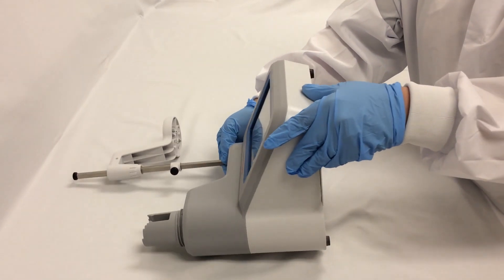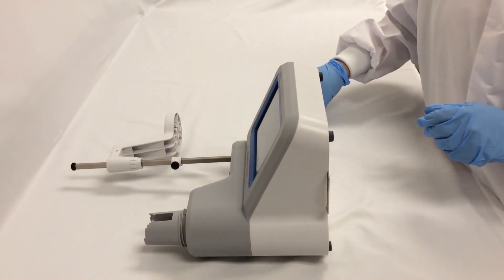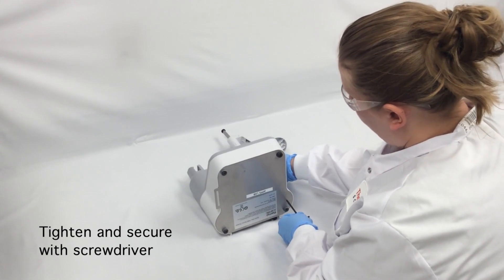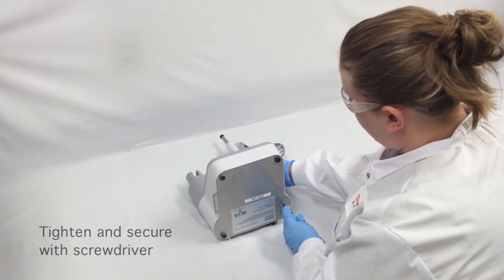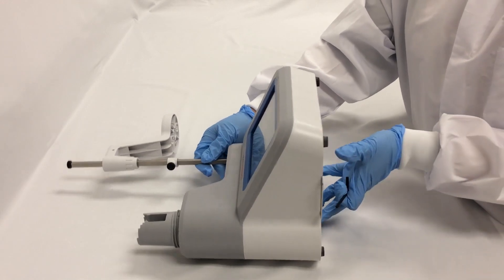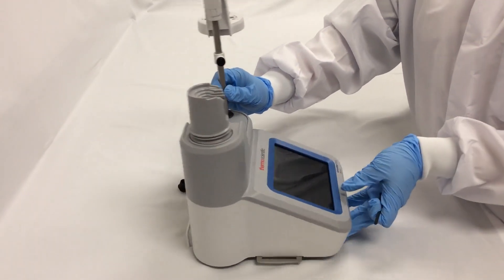Turn the titrator onto its side and use the included screwdriver to turn the captive screw in place until it tightens. The electrode arm is now securely in place.